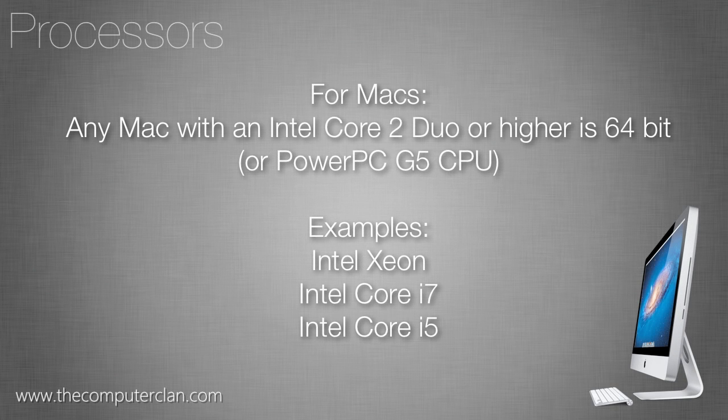Another example: if you're a Mac user, it's a little easier to tell if you have a 64-bit computer, because most machines after 2006 were 64-bit, but you can still check the processor. Any Mac with an Intel Core 2 Duo or higher is 64-bit — for example, a Mac Pro with an Intel Xeon, or an iMac with a Core i7 or Core i5. Those are all 64-bit processors. Also, if you have one of the higher-end Macs from the PowerPC era, a PowerPC G5 processor is 64-bit as well, though those aren't really used anymore — it's all Intel now.